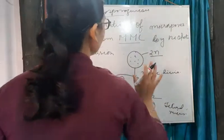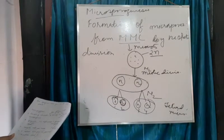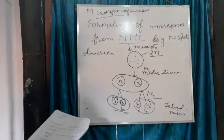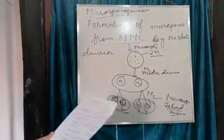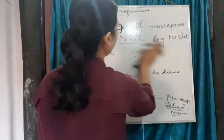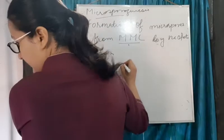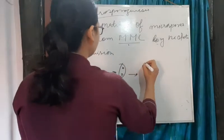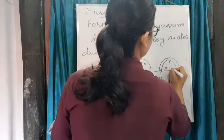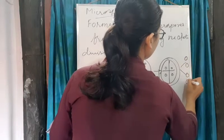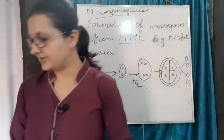The meiocytes, also called microspore mother cells, undergo meiotic division and produce haploid microspores called the microspore tetrad. Here you can see the diagram: the meiocyte gives rise to two cells after meiosis one, then four cells after meiosis two. These four cells later desiccate and release the pollen grains.